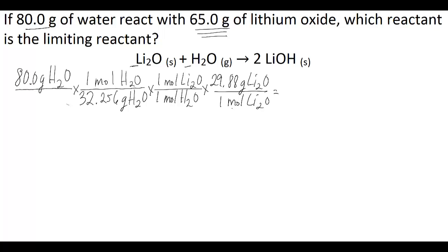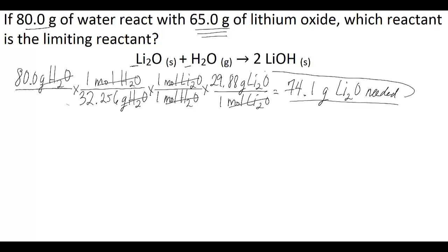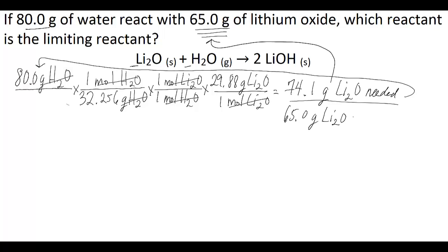So you're in grams of lithium oxide because everything else cancels out to leave you with those units. When you do the math, you end up with 74.1 grams of lithium oxide needed to react with those 80 grams of water. You know that you only have 65.0 grams of lithium oxide available. If all 80 grams of water are to react, you need 74.1 grams of lithium oxide — you don't have that, you only have 65 grams. So lithium oxide is the limiting reactant.